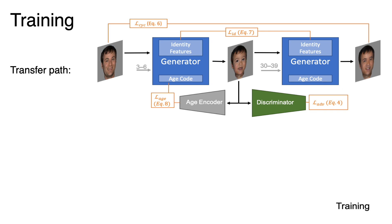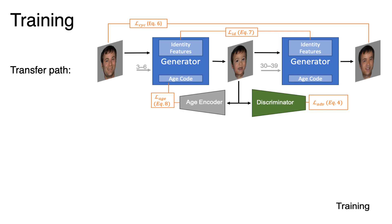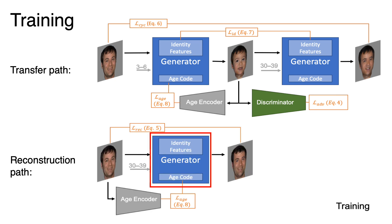In the second forward pass, we try to regenerate the original image from the transformed image using the ground truth age class as input. We enforce cycle consistency on both pixels and identity features using an L1 loss. In the third forward pass, we try to auto-encode the image by feeding it to the generator along with its ground truth age cluster, and penalize the pixel difference with an L1 loss.